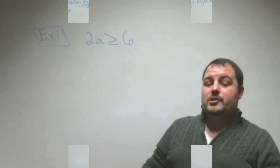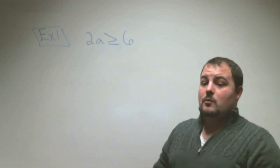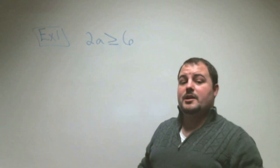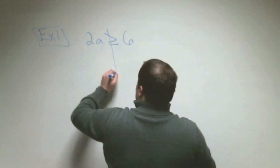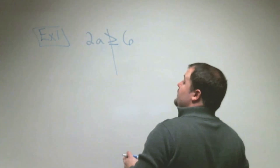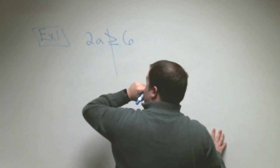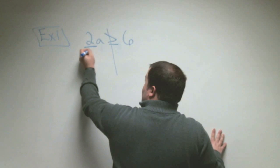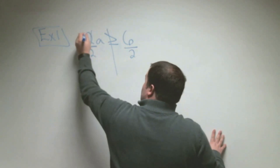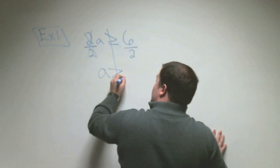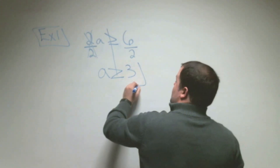Let's look at example one. We have 2 times a is greater than or equal to 6. This 2 is multiplying the variable a, and our job is to get a all by itself. We draw a line through the inequality sign and get rid of the 2 by dividing both sides by 2. We get a is greater than or equal to 6 divided by 2, which is 3.